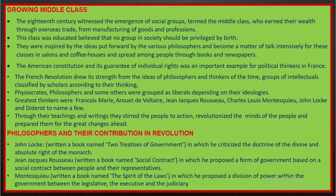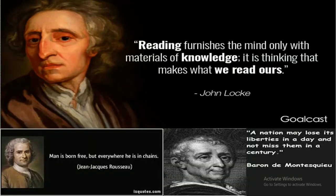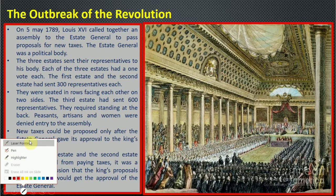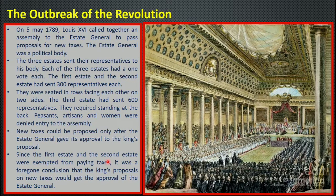We have already discussed the political causes and the growing middle class in the previous session. Now, Louis XVI called a meeting of the Estates General. The main motive was that the treasury had become empty, so he needed to raise taxes. In this meeting, the first and second estate had 300 representatives each, and the third estate had 600 representatives.